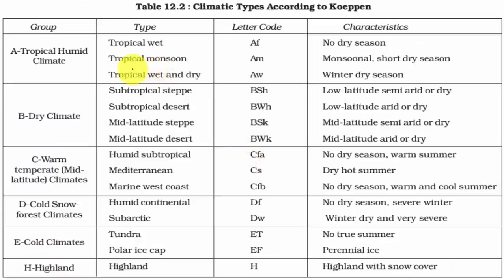We have studied about important types under tropical humid climate. Equatorial rainforest climate, also called tropical wet type, has no distinct dry season and year-long temperatures are constant between 25 to 27 degrees Celsius. Tropical monsoon type has three distinct seasons: summer, rainy season, and winter. In tropical wet there is only one season - rainy season. Tropical wet and dry type, also called savannah type, has two seasons: summer which is wet, and winter which is totally dry.